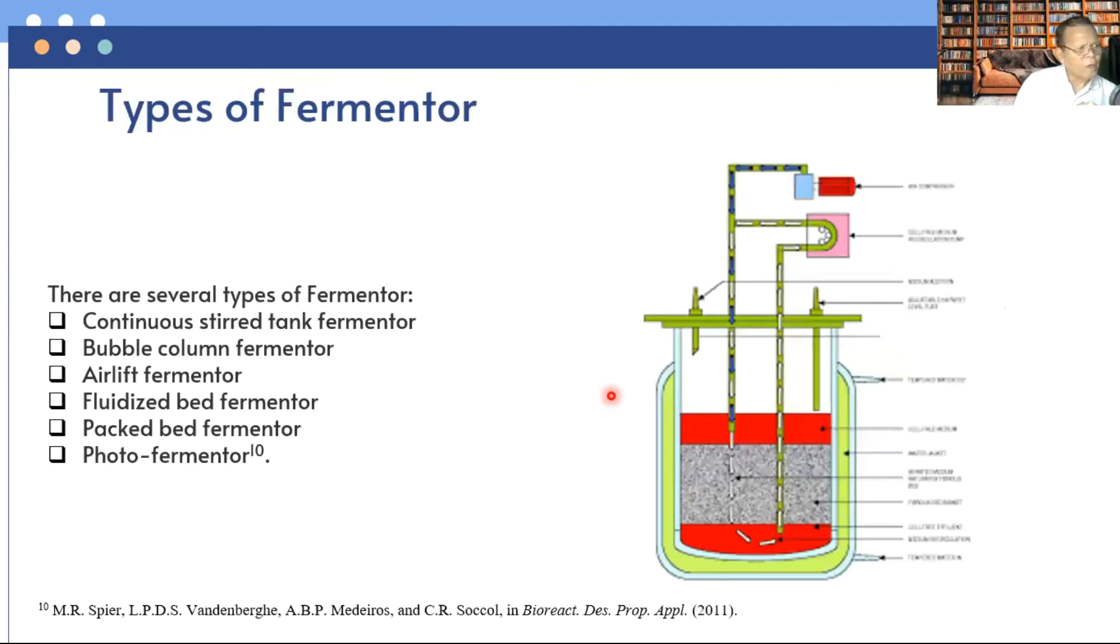Then now let's move to types of fermentor. There are several types of fermentor: continuous stirred tank fermentor, bubble column fermentor, airlift fermentor, fluidized bed fermentor, packed bed fermentor, and photo-fermentor.